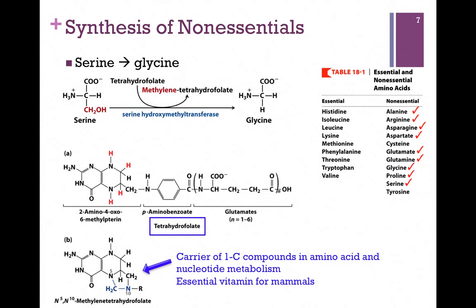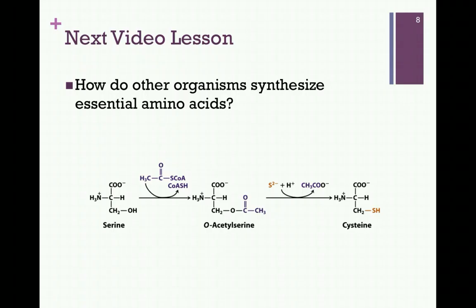There are still two more on our list of non-essentials — cysteine and tyrosine — but remember we synthesize these from essential amino acids, so we'll consider those in the next lesson. In our next lesson on nitrogen metabolism, we'll also see how other organisms synthesize the essential amino acids that we are unable to make for ourselves.